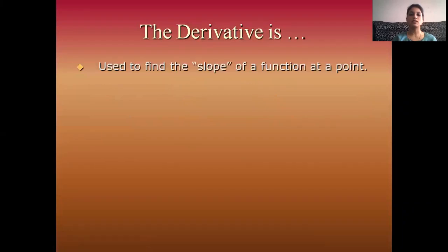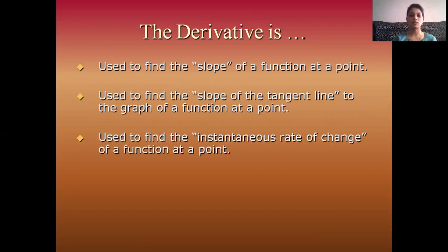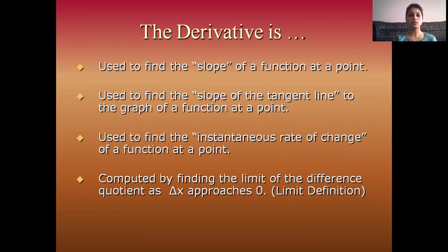The derivative is used to find the slope of a function at a point, specifically the slope of the tangent line to the graph of a function at a point. The derivative is also used to find the instantaneous rate of change of a function at a point. The derivative is computed by finding the limit of a difference quotient as delta x approaches 0 — that is the definition of the derivative.